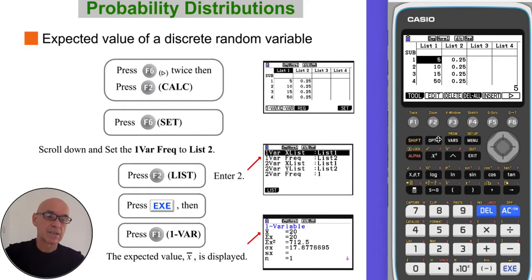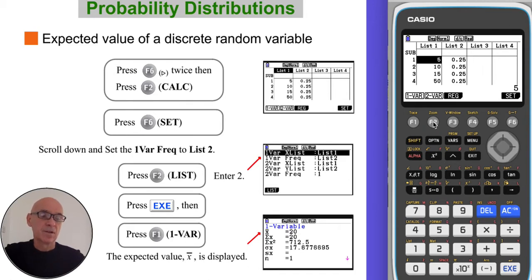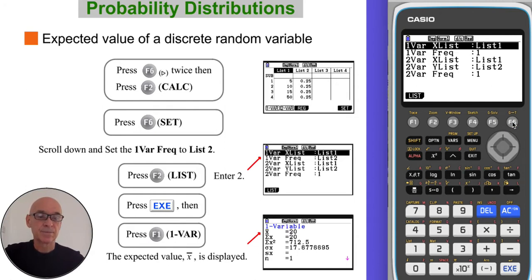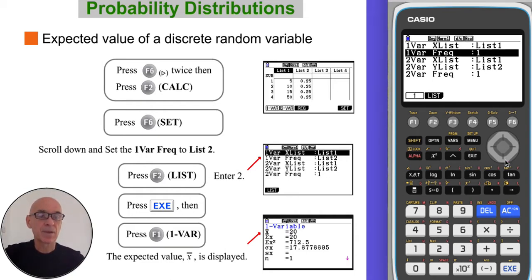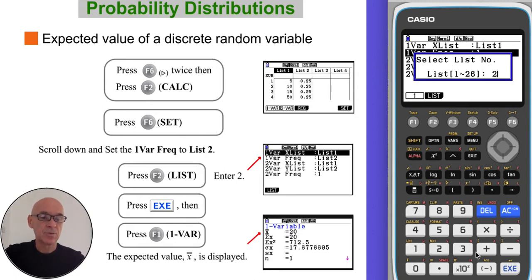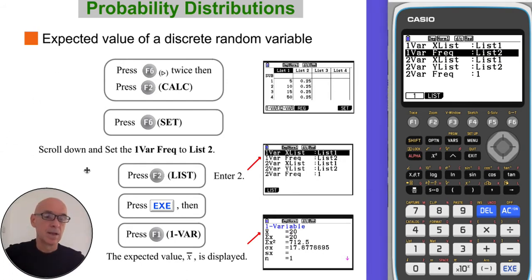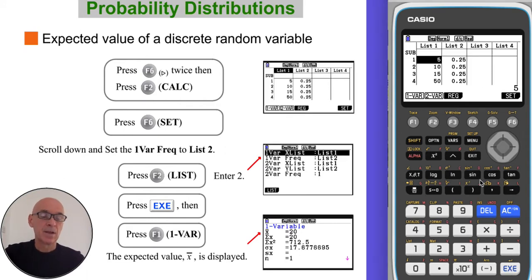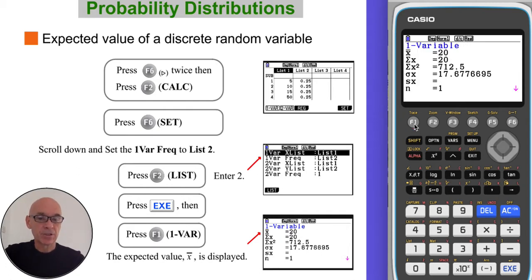Then press F6 twice to get back to the main menu, followed by F2 to do a calculation, then F6 to set the list. Scroll down and choose F2 for list and select F2 where the probabilities have been entered. Press enter again, and finally press F1 for one variable calculation — we will get the results. As shown, the expected value is 20.